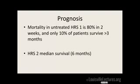What is the prognosis? Type 1, because it's more rapidly progressing, is worse — within two weeks you have 80% mortality, and if you can live up to three months, only 10% of patients will survive. It's really, really bad. Type 2 survival is about six months.